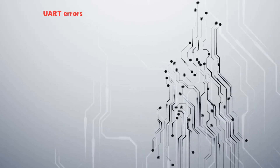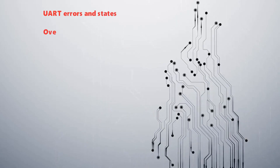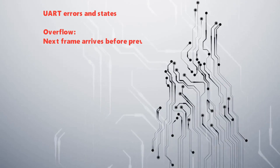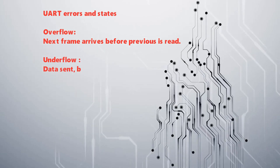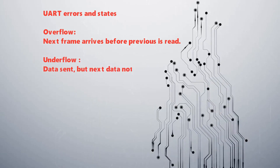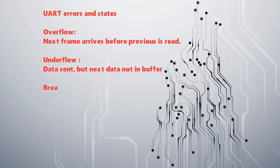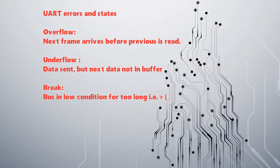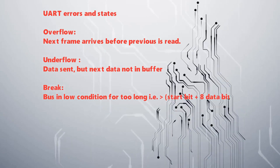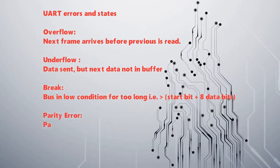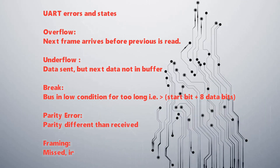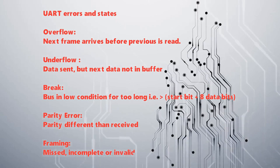UART error states include: Overflow — the next frame arrives before the previous one is processed; Underflow — data is sent but the next data is not in the buffer; Break — the line is in a low condition for too long, greater than the start bit plus data bits; Parity error — the parity is different than expected; and Framing error — an incomplete or invalid start and/or stop condition.